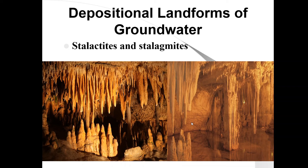They are formed when the calcium carbonate dissolved in groundwater gets deposited once the water evaporates. These structures are most commonly found in limestone caves. Stalactites are the hanging throne-like features hanging from the roof, and stalagmites are deposits which rise up from the floor. When the stalactites and stalagmites happen to join together, it gives rise to a pillar or column.